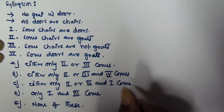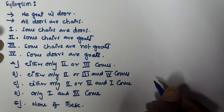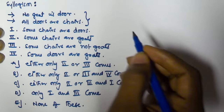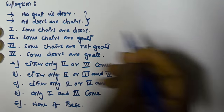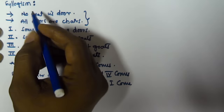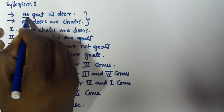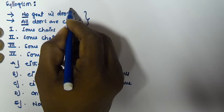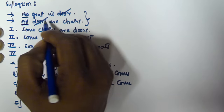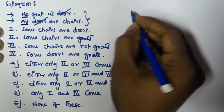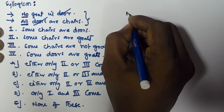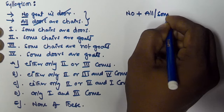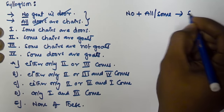Now let us derive all possible conclusions from the given two syllogisms. The first one starts with 'no' and the second with 'all,' and the predicate of the first is equivalent to the subject of the second. So we can use the rule: No plus All (or Some) gives Some Not Reversed.